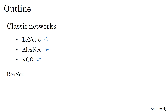Then I want to show you the ResNet, or residual network. You might have heard that neural networks are getting deeper and deeper. The ResNet neural network trained a very, very deep 152-layer neural network, and it has some very interesting tricks and ideas for how to do that effectively. And finally, you'll also see a case study of the Inception neural network.